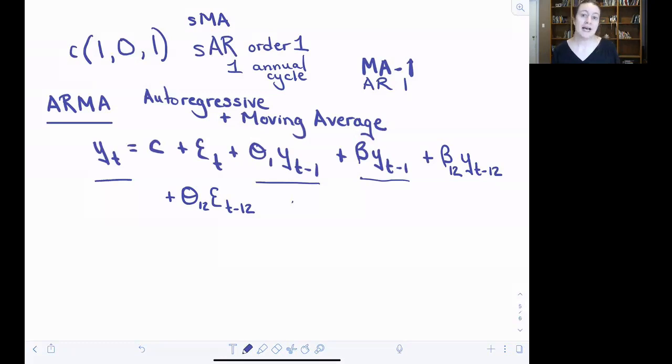And if we wanted to add a two-year seasonal signal, a two-annual cycle correlation into our structure, all we would do is add yet another term that incorporated that information from 24 months prior to the focal observation that we're trying to explain.